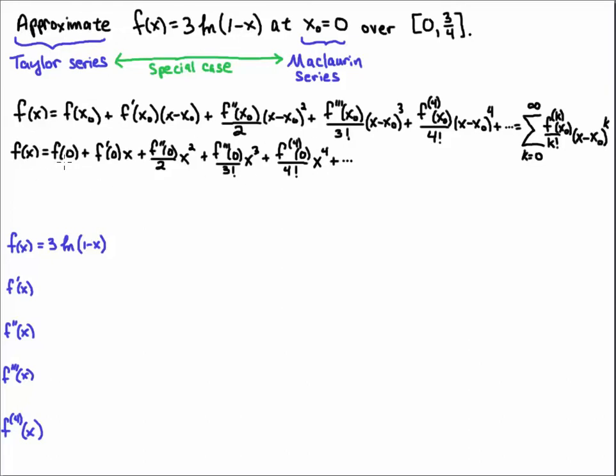So we need to compute this f of 0, f prime of 0, f double prime of 0, f triple prime of 0, and the fourth derivative at 0. So let's just go ahead and compute all those derivatives. So we have 3 natural log of 1 minus x. So we truck through and we compute those derivatives. I'm assuming you know how to compute derivatives with natural logs in this video.